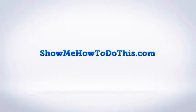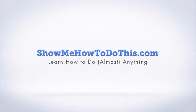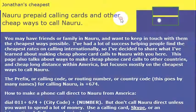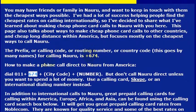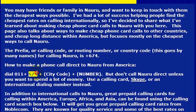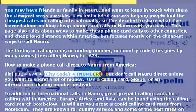Calling Nauru is very simple once you know the calling code for the country. If you want to pick up the phone and call them, and you've got friends or family there, you just dial from any landline in the United States: dial 011 and then the country code, which is 674. This gets you an international outside line, and then 674 gets you to the country of Nauru so you can reach friends and family there, and then you dial the phone number that you want to reach.